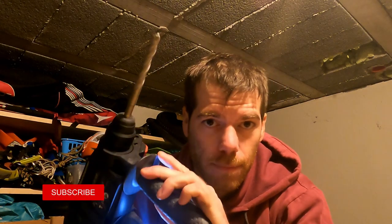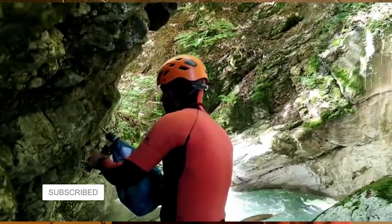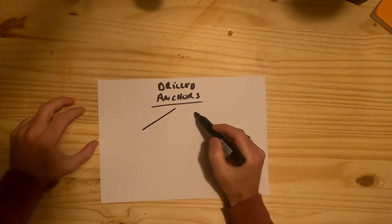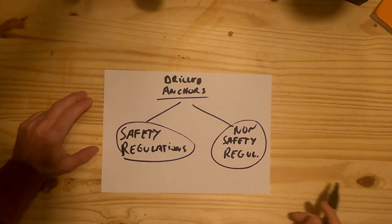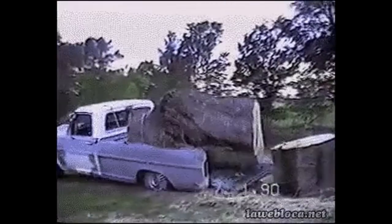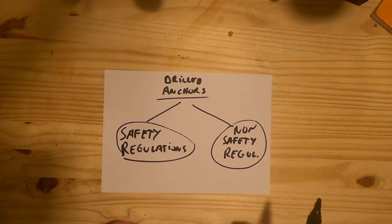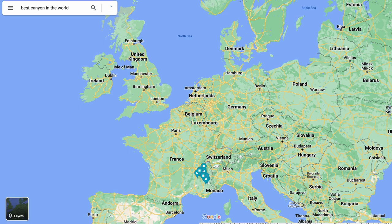Let's talk about anchors. Drilled anchors. You can divide them into two categories. One is according to the safety regulations, and the other one is not according to safety regulations. Doesn't mean that the non-safety regulations are not strong enough. This all has got to do with the regulations of your country you're living in.